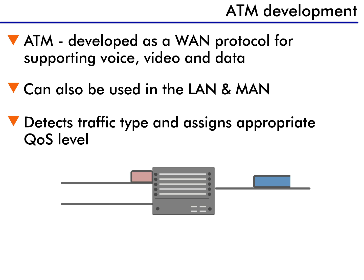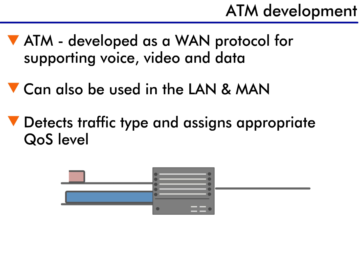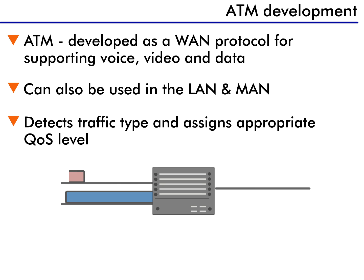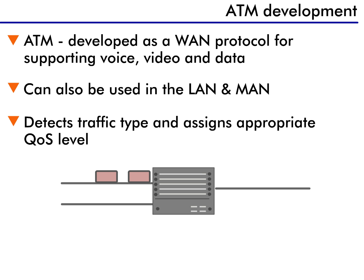Let's compare how switches work to something you might see in everyday life. Have you ever been driving in a car and had to wait at a railroad crossing for a train? The train gets there first, so you have to wait. Well, this is how switches work — the packet that gets there first gets the priority, no matter what. Now imagine you're in an ambulance and the same thing happens. Even though it's an emergency, you still have to wait for the train to pass. The same is true of switches: the priority of the packet doesn't matter. The one that gets to the switch first gets processed first.